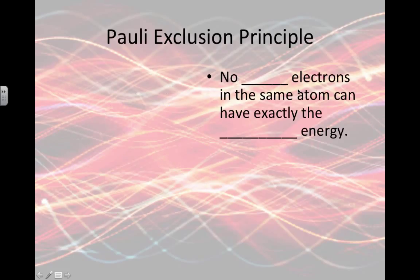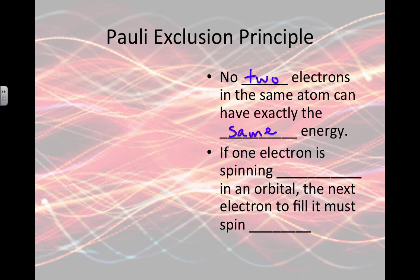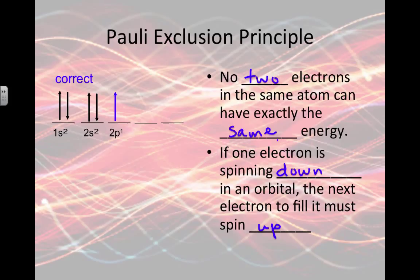The Pauli exclusion principle was the idea that no two electrons in the same atom can have exactly the same energy. So if they're going to be in the same shell, in the same subshell, then they have to spin in opposite directions. If an electron is spinning down in an orbital, the next electron to fill it must spin up, or they can't be in the same space at the same time.